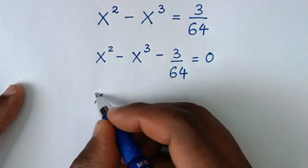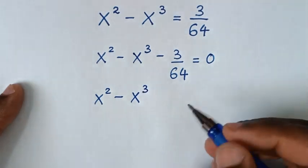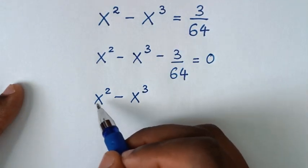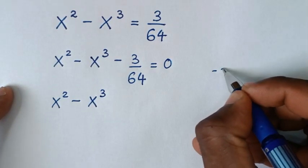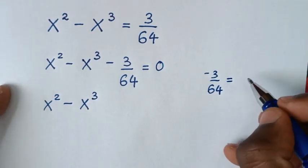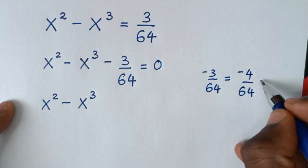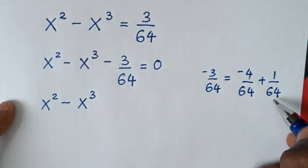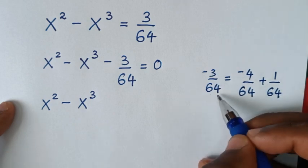Then in the next step, it will be x squared minus x cubed. We split this negative 3 over 64 according to the two exponents. So negative 3 over 64 is the same as negative 4 over 64 plus 1 over 64, because 1 over 64 minus 4 over 64 is negative 3 over 64.